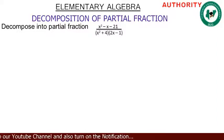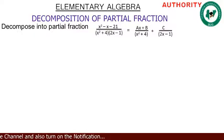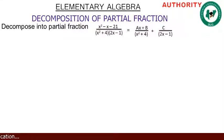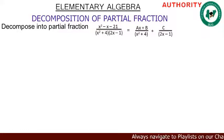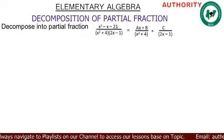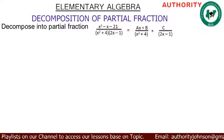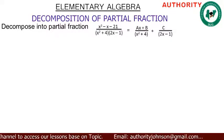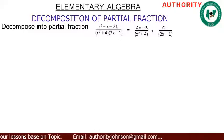As a result of this, because x squared plus 4 cannot be factorized any further, we write it as (ax plus b) all over (x squared plus 4), then plus c all over (2x minus 1). So because of x squared plus 4 we say ax plus b all over the factor x squared plus 4, plus c all over the next factor 2x minus 1.